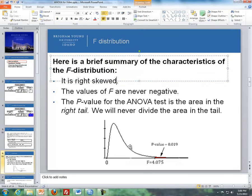Here's a short summary of what the F distribution is. First, as you see in this image, it is a right skewed distribution. The F values are never negative. If you look here below, it starts at zero and then it's all positive.